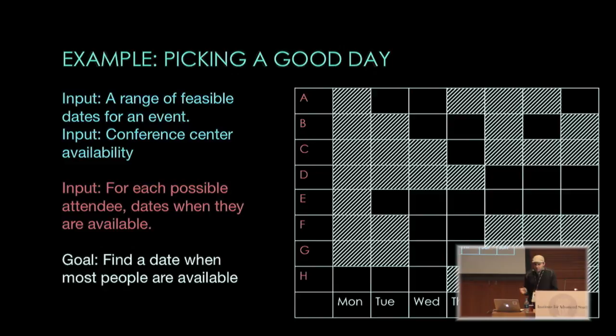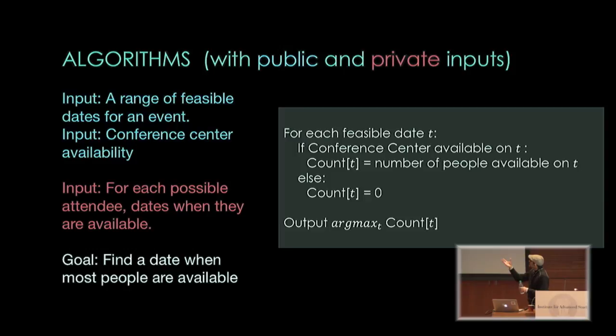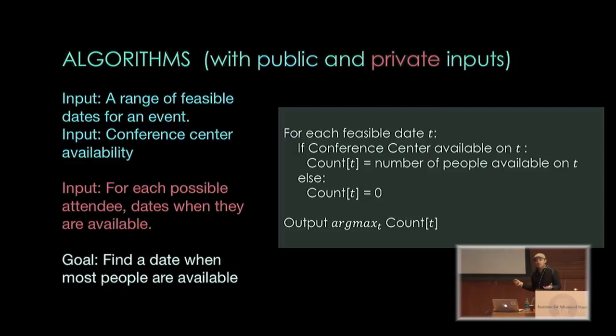What does an algorithm for such a problem look like? An algorithm takes the data, processes it, and comes up with an answer. One way to write an algorithm to solve this problem is to go over all feasible dates. If the conference center is not available on a given date, set the count to zero. For every other date, count how many people are available. Then you have an array of numbers containing the number of people that can make it on each date. Look at the largest entry — the argmax gives you the date with the largest availability.